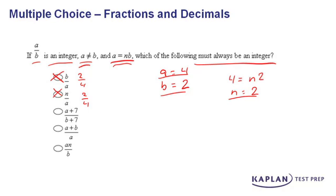Let's keep going. Answer choice C, we're going to get a plus seven, which is four plus seven, over b plus seven, which is two plus seven. We're going to get 11 over nine. That's not an integer, so C can't be our answer.